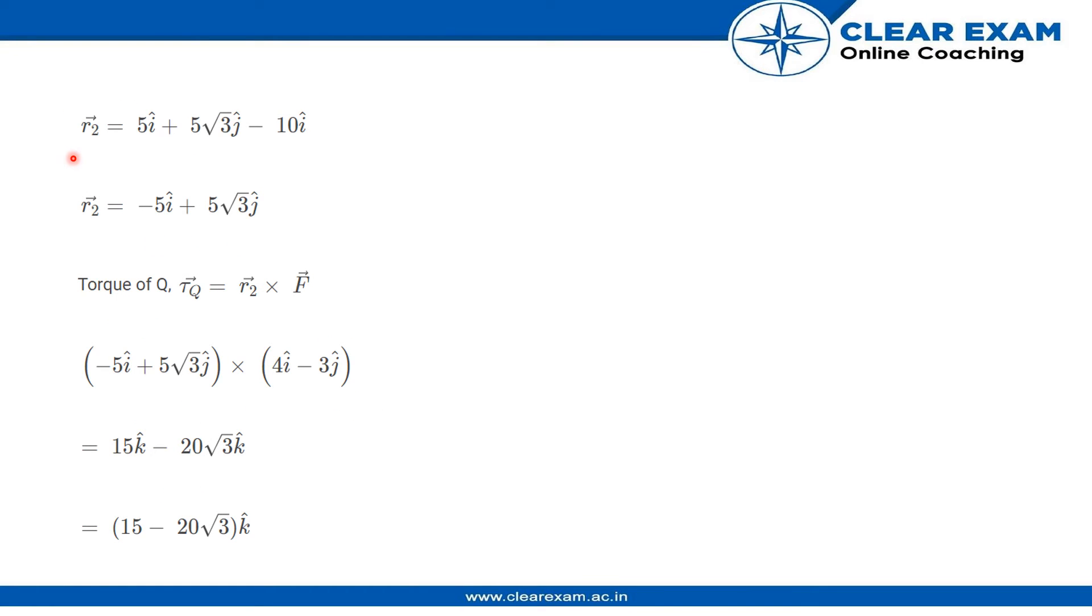Now we have r2 vector, which equals 5i + 5√3j - 10i, which simplifies to -5i + 5√3j. So now we find the torque about point Q.